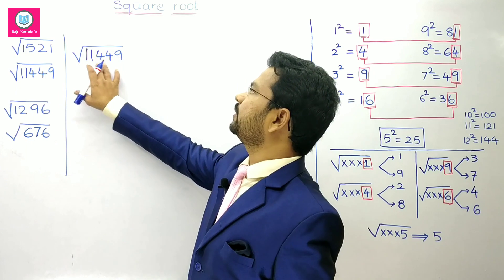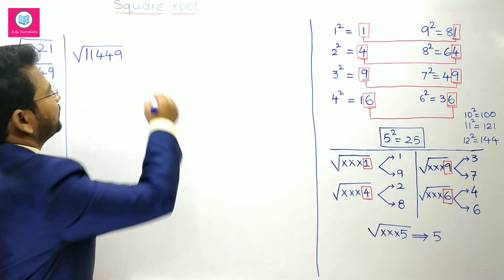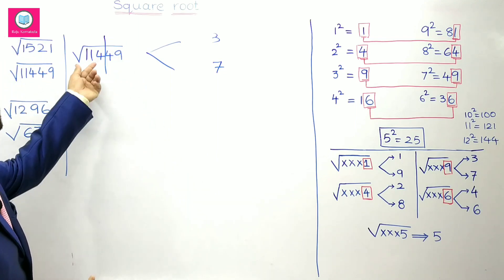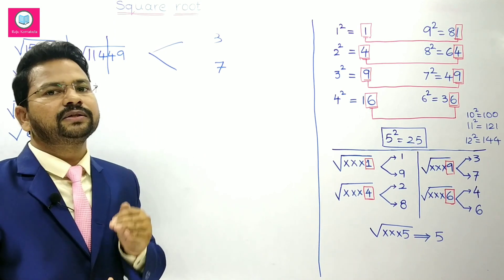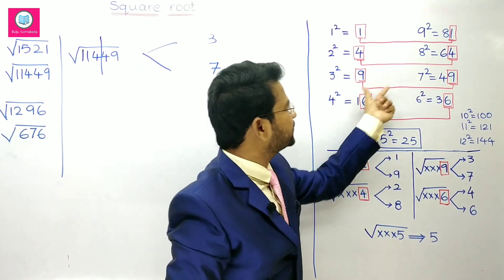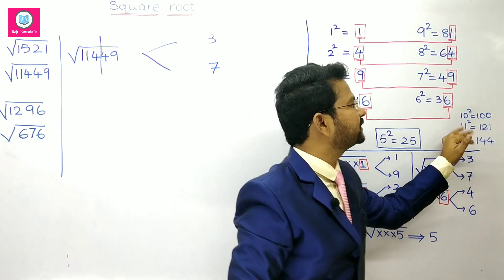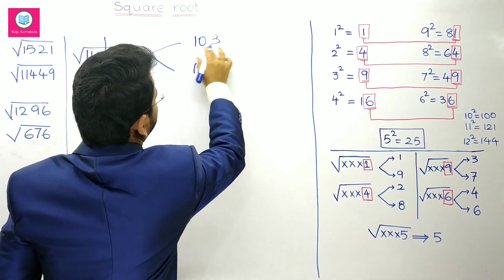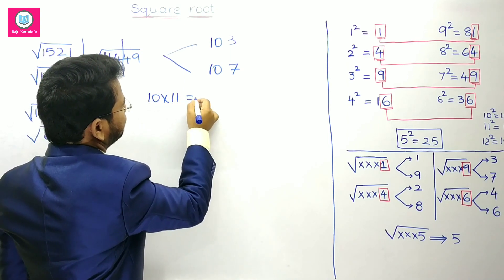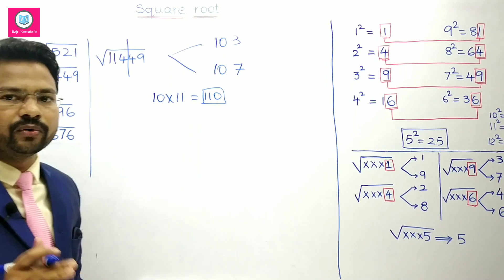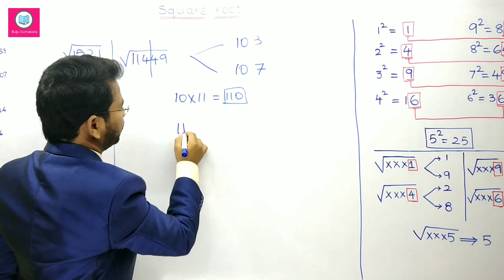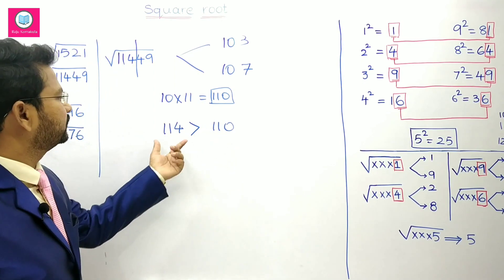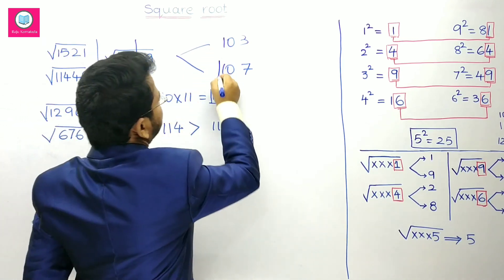Now the square root of 11449. The number ends with 9, so it may be 3 squared or 7 squared. Leave two digits and consider 114. The smaller perfect square near 114: 11 squared is 121 which exceeds 114, so we take 10 squared which is 100. We take 10, giving candidates 103 or 107. Multiply 10 by the next number 11: 10 into 11 is 110. Compare 114 and 110 — 114 is greater — so we take the greater number. Therefore, 107 is the square root of 11449.